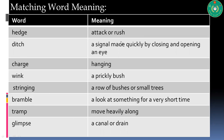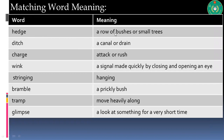The jumbled meanings are: attack or rush; a signal made quickly by closing and opening an eye; hanging quickly; bush. Now the matched meanings: hedge means a row of bushes or a small ditch; charge means attack or rush; wink means a signal made quickly by closing and opening an eye; stringing means hanging; bramble means a prickly bush; tramp means to move heavily along; glimpse means a look at something for a very short time.